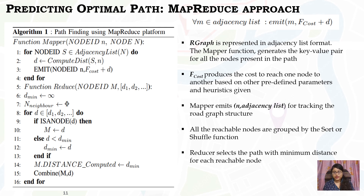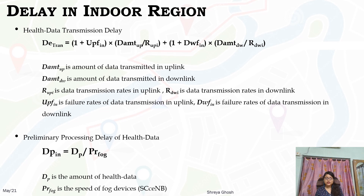We have executed a path-finding algorithm on the MapReduce platform for first response. This algorithm shows the basic steps of the procedure. A cost parameter produces the cost to reach one node to another based on predefined parameters and heuristics. Each MapReduce iteration advances to extract the optimal path by one hop, and multiple iterations explore the whole graph. More reachable nodes are included with subsequent iterations as the search expands. To depict the performance of CLAWER in terms of power consumption and delay, we have theoretically modeled the interconnection of cloud, fog, and IoT devices. The delay in health data transmission using SSNV in indoor regions is calculated as a function of data transmission amount in uplink and downlink, data transmission rates, and failure rates.